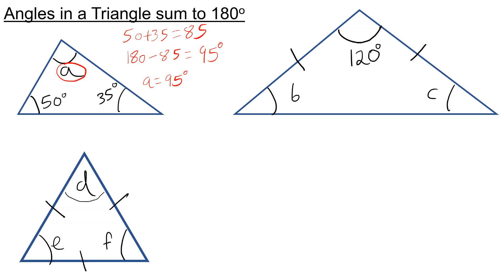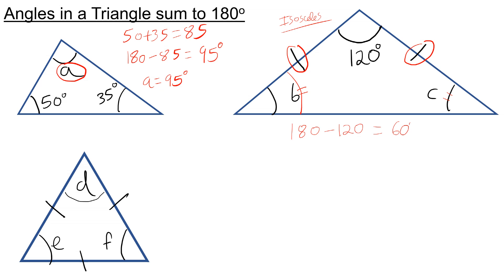The second question has an isosceles triangle, because both of these two sides are equal — that's what the straight lines mean. Because this is an isosceles triangle, we know that B and C have got to be the same. So to work out B and C, I do 180 take away 120, which is 60 degrees, and then divide equally between B and C, giving 30 degrees each.